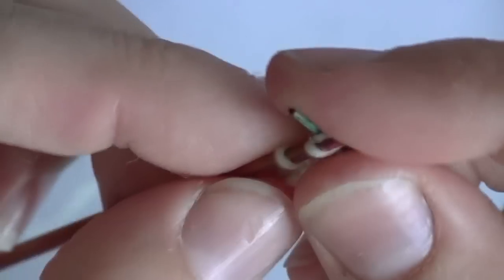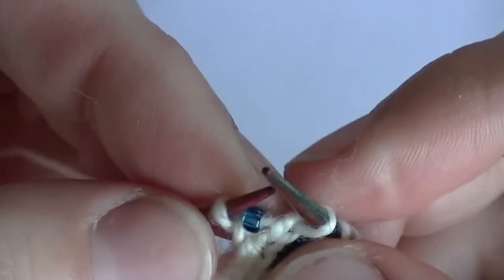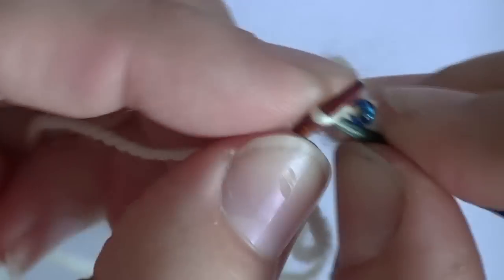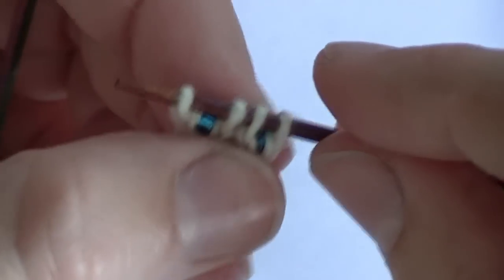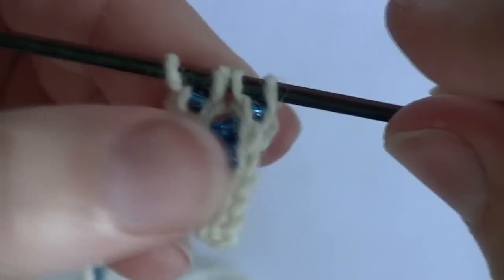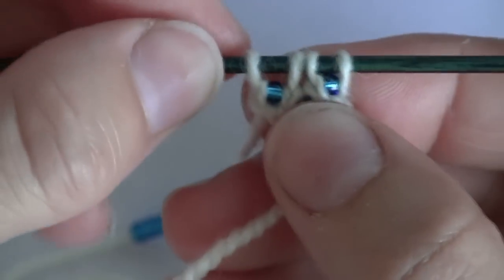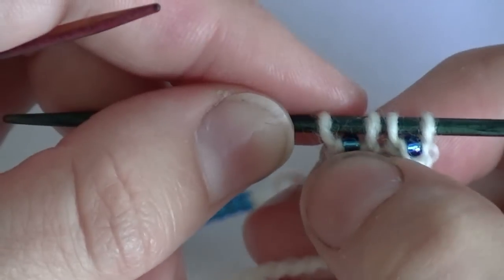And knit it in place. Maybe I'll knit one more, slide another one up, snug it in between those two stitches, and knit. Alright, so now I have those beads now knit in those stitches.